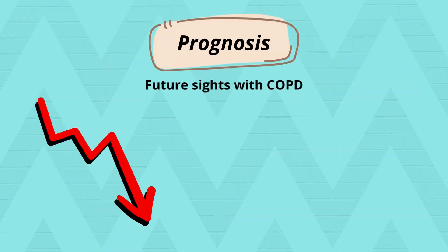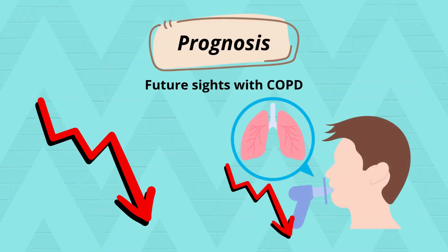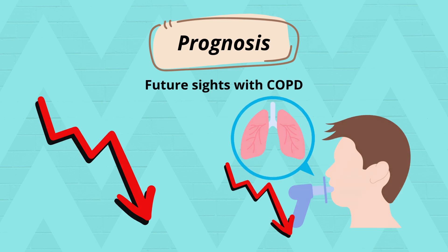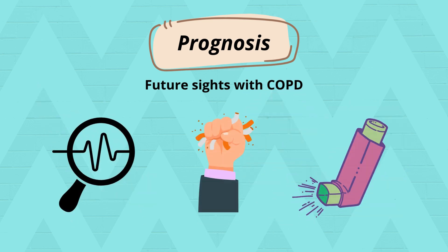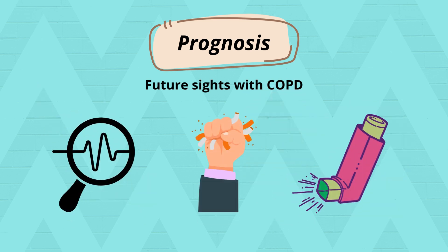COPD is a progressive disease. Lung function gradually declines, especially if the patient continues smoking or has frequent exacerbations. However, with early diagnosis, smoking cessation, and proper treatment, many patients can maintain a good quality of life for years. Prognosis varies based on disease severity, comorbidities, and access to care.